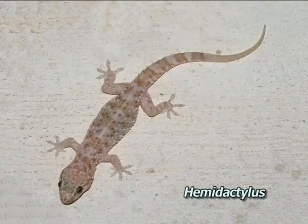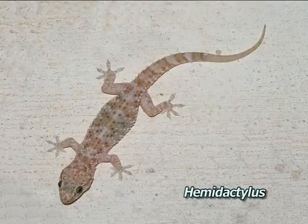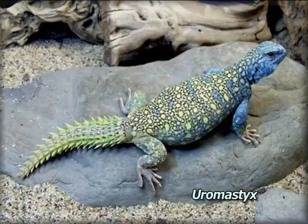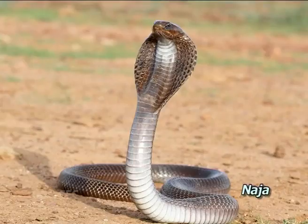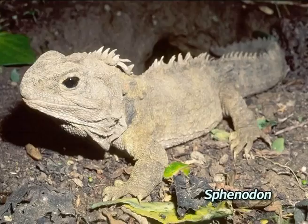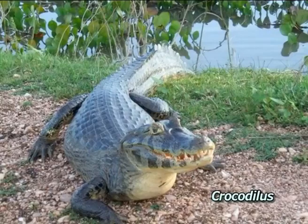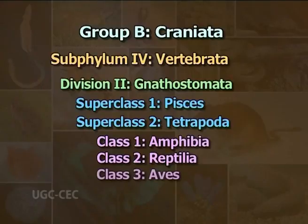Heart is three-chambered. Cerebellum of the brain is well developed. Examples include Hemidactylus, Uromastyx, Naja, Sphenodon, crocodiles, etc.